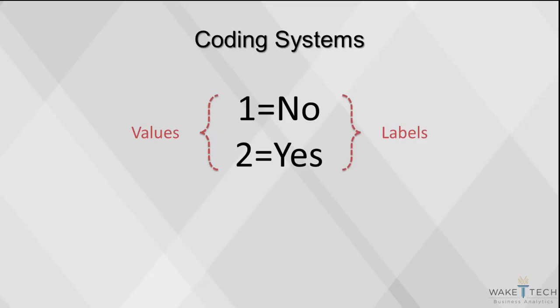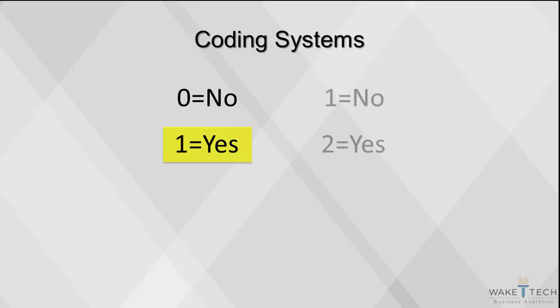This brings out an important point in coding. When you assign a value to a piece of information, you must also make it clear what the value means. In the first example, 1 equals yes, but in the second example, 1 equals no. Either way is fine, as long as it's clear how the data are coded.